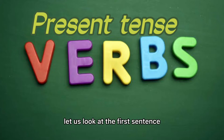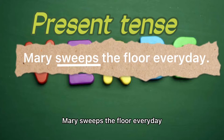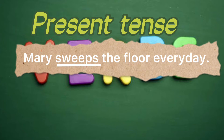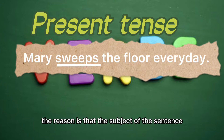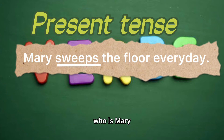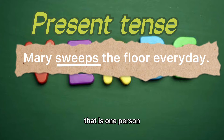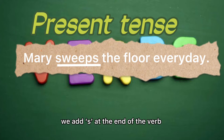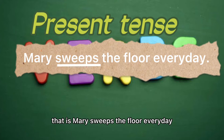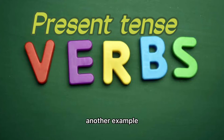Let us look at the first sentence: Mary sweeps the floor every day. The verb takes S at the end. The reason is that the subject of the sentence, who is Mary, the third person, is in a singular form — that is, one person. As a result, we add S at the end of the verb. That is, Mary sweeps the floor every day.